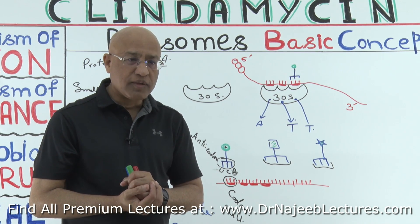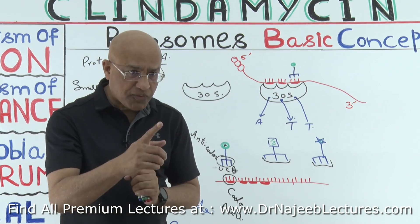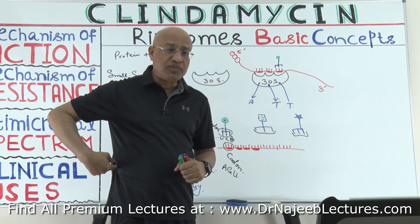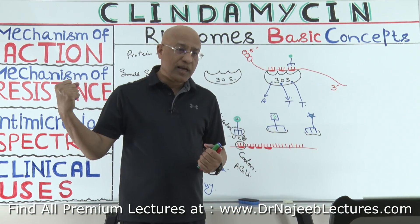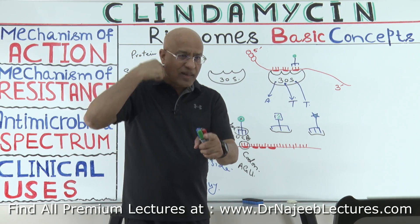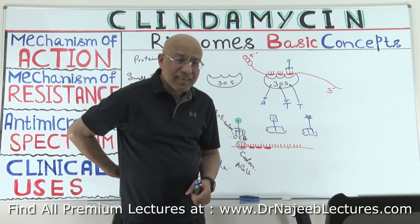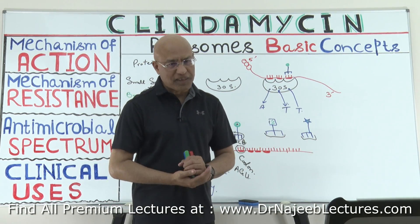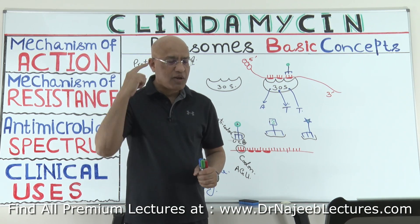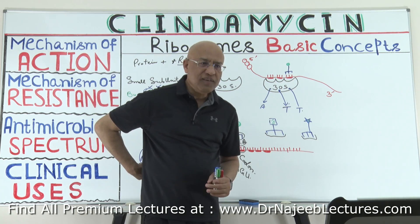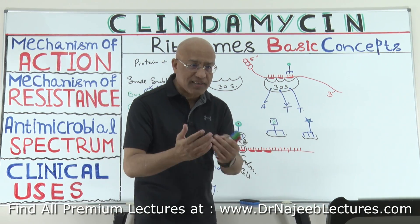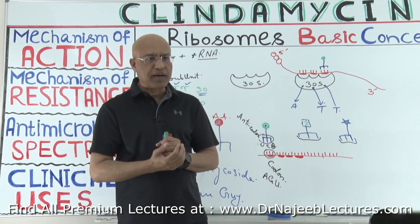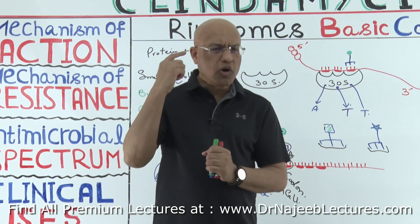Aminoglycosides produce serious side effects. As side effects, they produce ototoxicity and nephrotoxicity. Think of it as: this mean guy hits you on the ear, kicks your kidneys, and may leave you paralyzed. So there are three side effects: ototoxicity, nephrotoxicity, and neuromuscular blockage. Neuromuscular blockage is rare but a serious side effect.